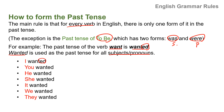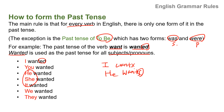I wanted, you wanted, he wanted, she wanted, it wanted, we wanted, they wanted. In present tense it's 'I want,' and 'he wants' — so third person singular takes an -s ending. But in the past tense, first person, second person, third person singular and plural are all just the same.